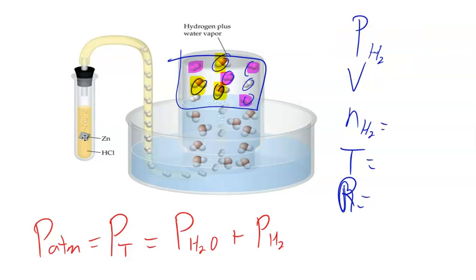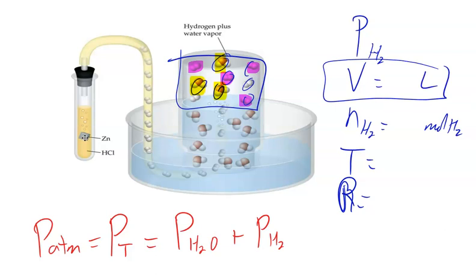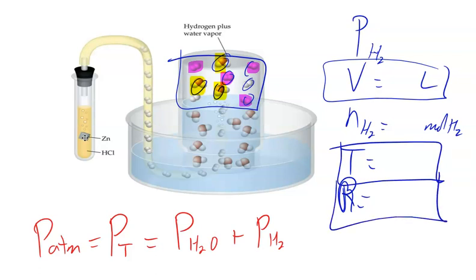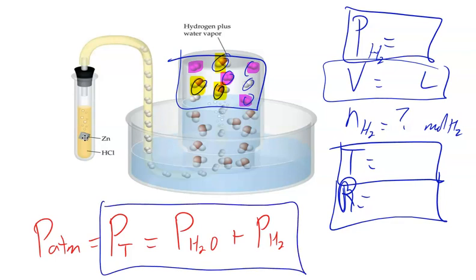To calculate moles of hydrogen gas, you need its pressure. From Dalton's law: pressure of hydrogen = total pressure − water vapor pressure. You look up the water vapor pressure for the lab temperature, subtract it from the atmospheric pressure, and that gives you the hydrogen gas pressure. This acts as a correction factor in lab calculations and gives you a more accurate answer.